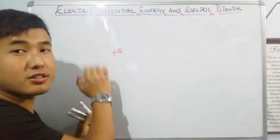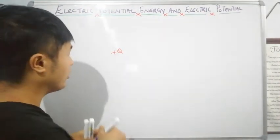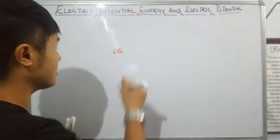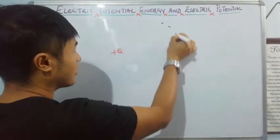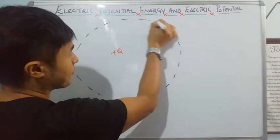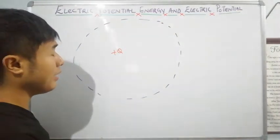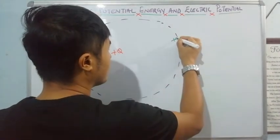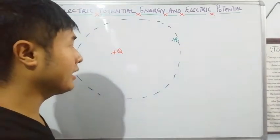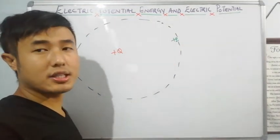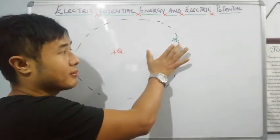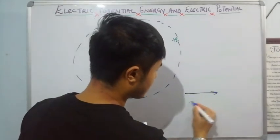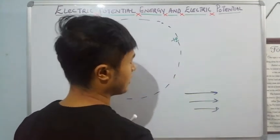If you have a source charge — a fixed charge — we all know that the charge will create an electric field around it. As soon as we place another charge in this electric field, this charge will experience a force. For example, this is my electric field, which can be visualized as imaginary field lines.